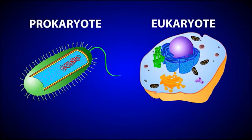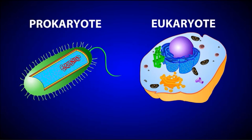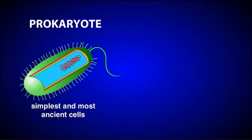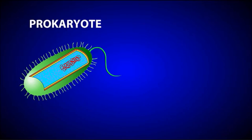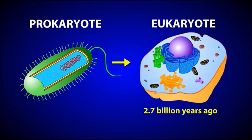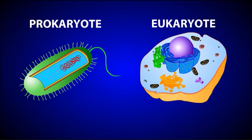On earth there are two major types of cells: prokaryotic and eukaryotic. Prokaryotic cells are the simplest and most ancient type of cell — they were the only form of life on earth for billions of years before eventually giving rise to eukaryotic cells. If you look at them side by side you can see a number of differences.